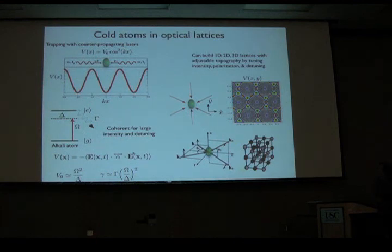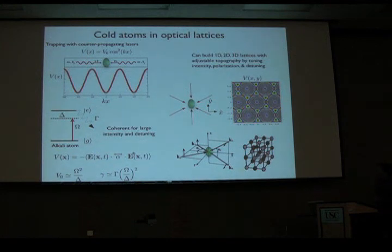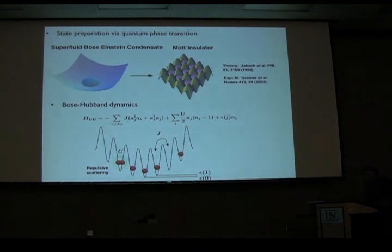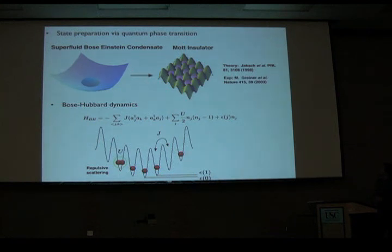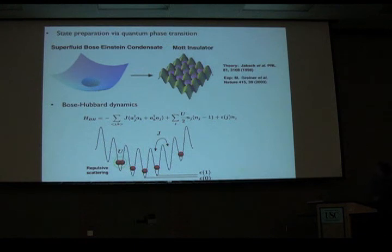For large intensities and large detunings, this can be a very coherent trapping potential. You can trap things for several seconds, and the flexibility of having potentials created by lasers means we can create different types of topographies — honeycomb traps or three-dimensional traps. There's advanced technology now for preparing single particles in single wells of lattices, particularly following the superfluid-to-Mott-insulator phase transition realized experimentally in 2003.